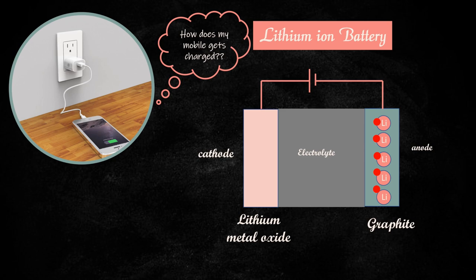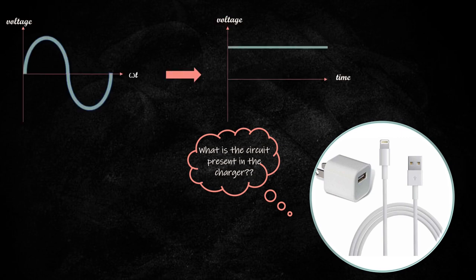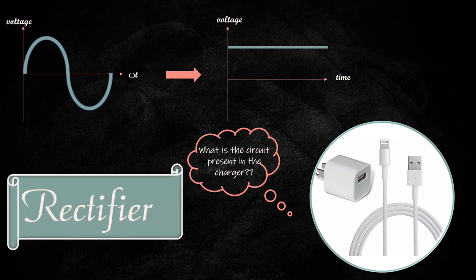The main thing to consider here is the external supply applied is DC supply. But the electrical supply we have in our home is AC. Now you might have guessed the answer for the second question. What is the circuit present in the charger? Of course, you are right. One of the circuits present in the charger is AC to DC converter. Rectifier is the circuit which converts AC voltage to DC voltage.